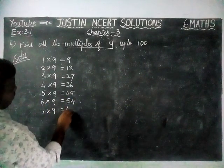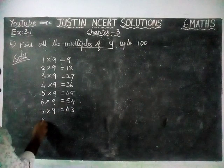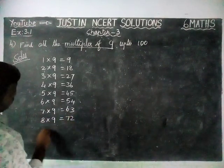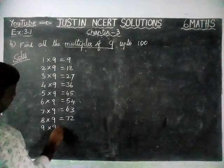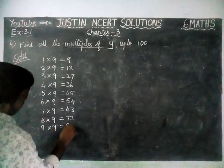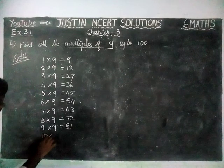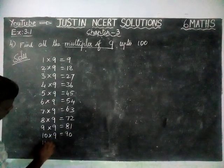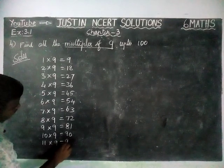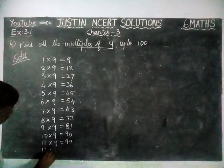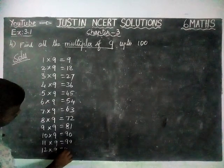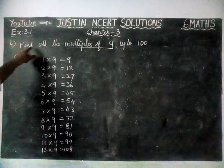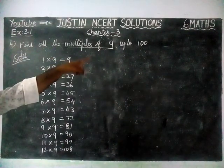7 nines are 63, 8 nines are 72, 9 nines are 81, 10 nines are 90, 11 nines are 99, 12 nines are 108. Find all the multiples of 9 up to 100.